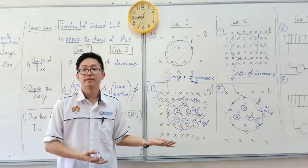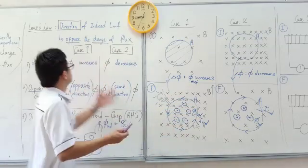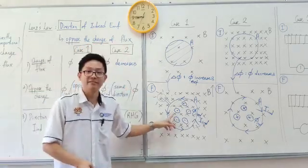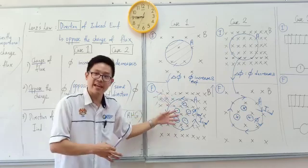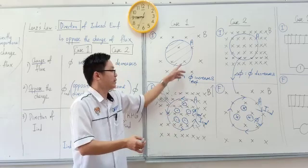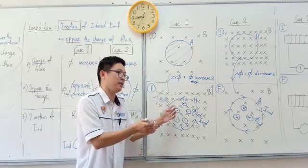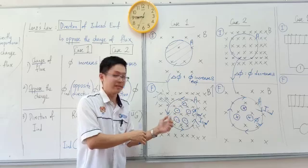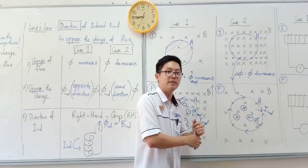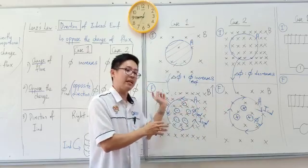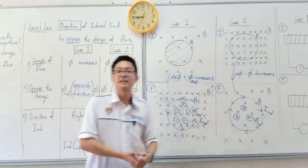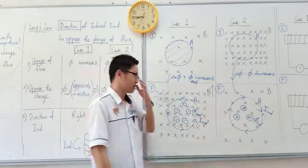So this is Lenz's Law. The key word is oppose the change of flux. When the flux is increasing, it tries to decrease that by producing opposite direction flux — opposite flux causes cancellation, so the net flux decreases. When something tries to decrease, you try to increase that by producing same direction flux. So any changes — if increase, you try to decrease; if decrease, you try to increase. Oppose the change. That's what we mean by oppose the change of flux. That is Lenz's Law.